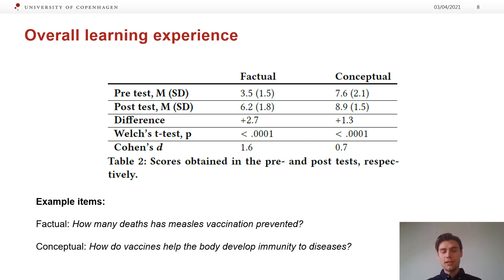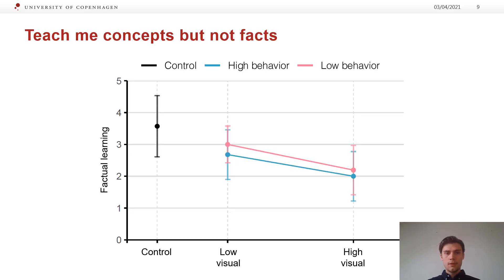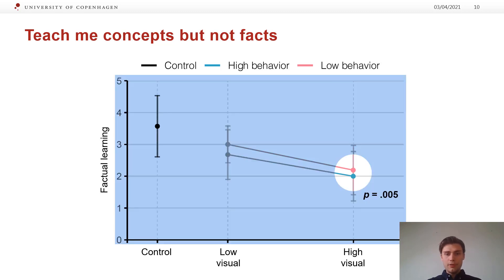On average, all participants improved their factual and conceptual knowledge about viral diseases and enjoyed the experience. However, there were some interesting learning differences based on the virtual instructor's appearance. As can be seen, virtual instructors actually risk leading to less factual learning, such as learning about numbers and figures. There were main effects of both appearance and behavior, which means that instructors of high visual and behavioral realism were significantly worse than control.